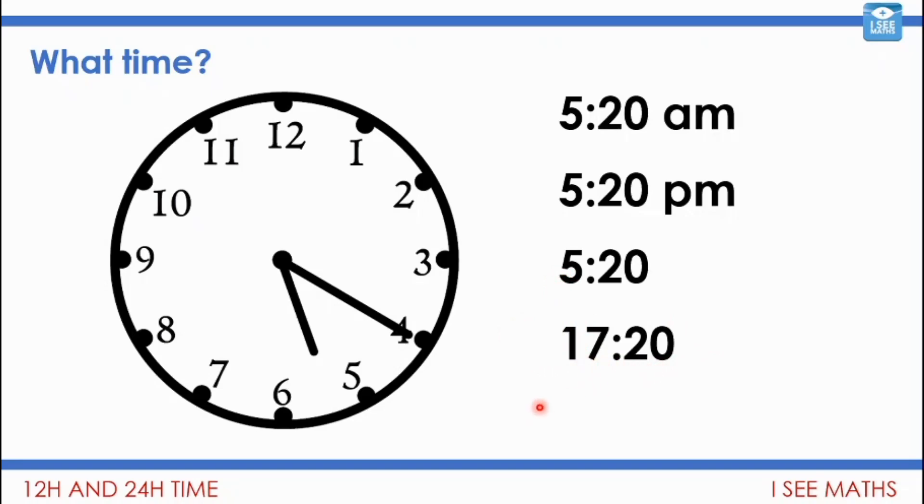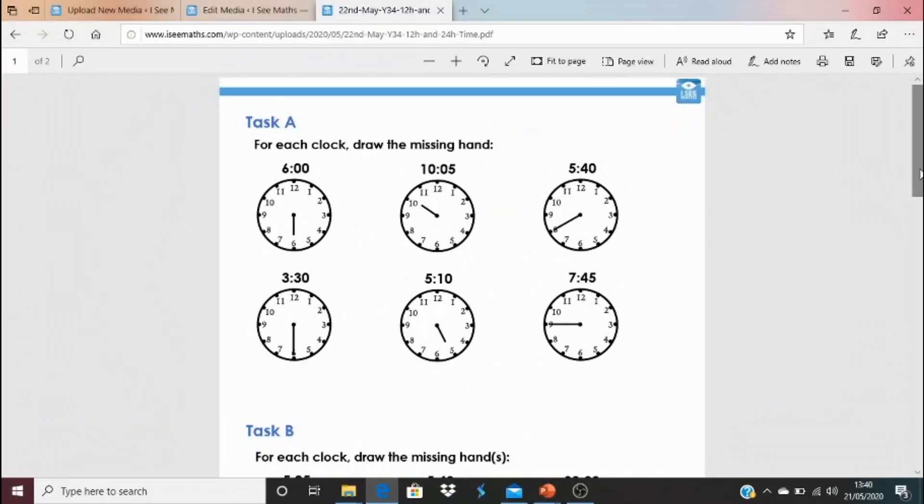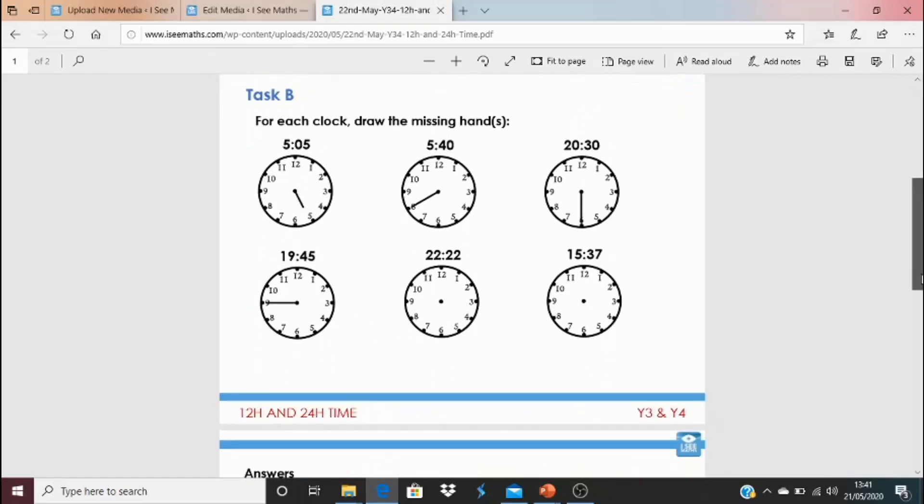You get to today's questions by clicking on the blue link underneath the video. For Task A, there's six clocks to complete. For each clock, draw the missing hand. You've got to work out, is it the minute hand that's missing that you need to draw on, or is it the hour hand that you need to draw on? Remember that the minute hand is longer and the hour hand is shorter.